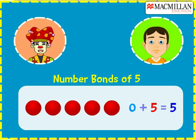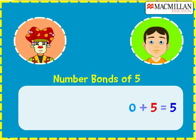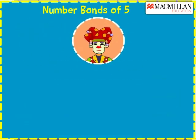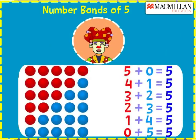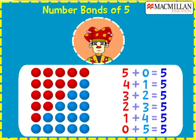That means we can also add all the five red balls with zero blue ball to get five balls. Wow, kids! Now see my magic!